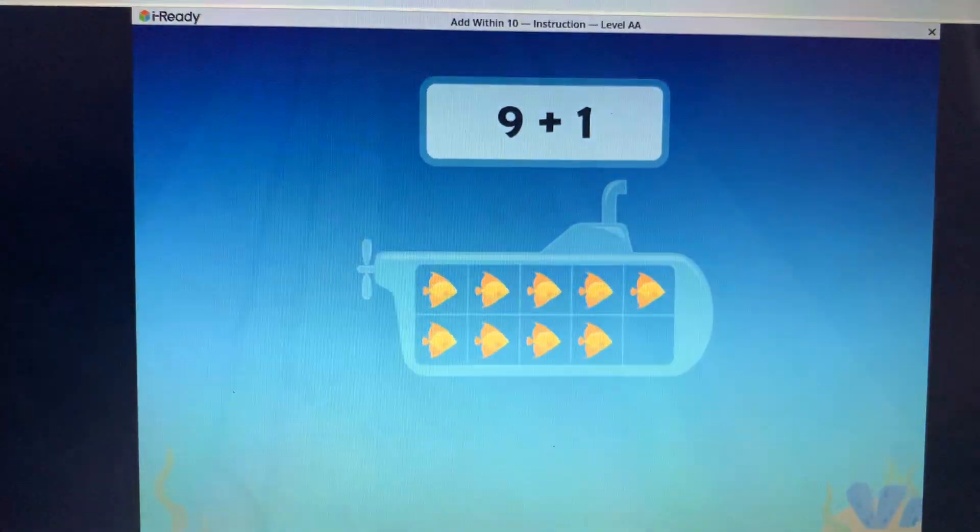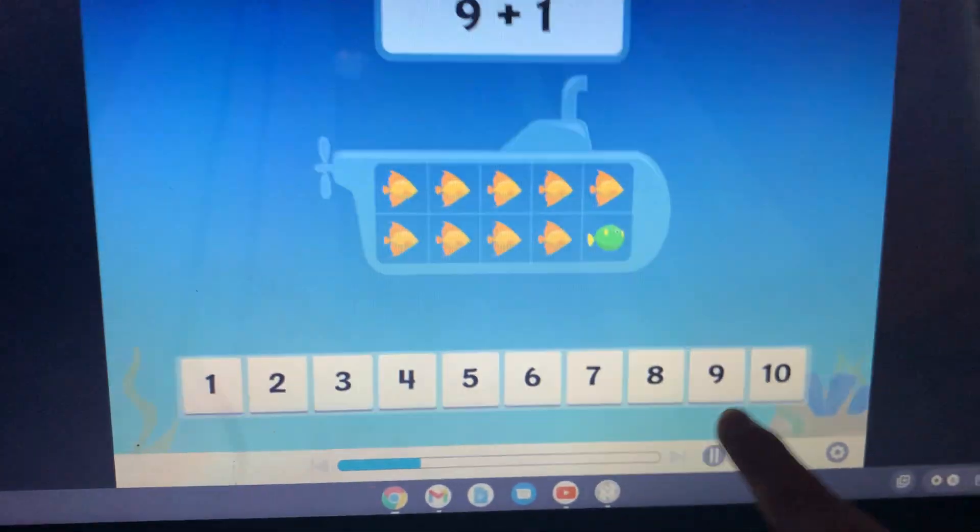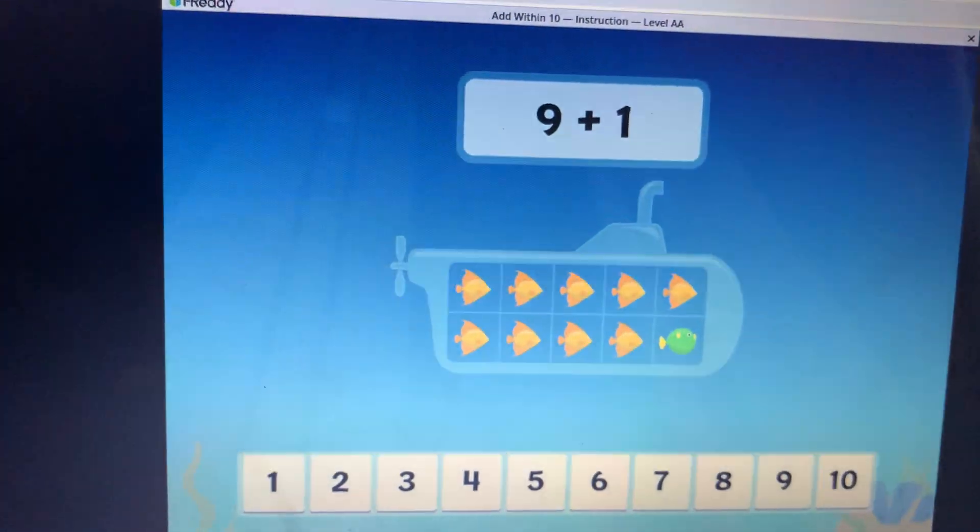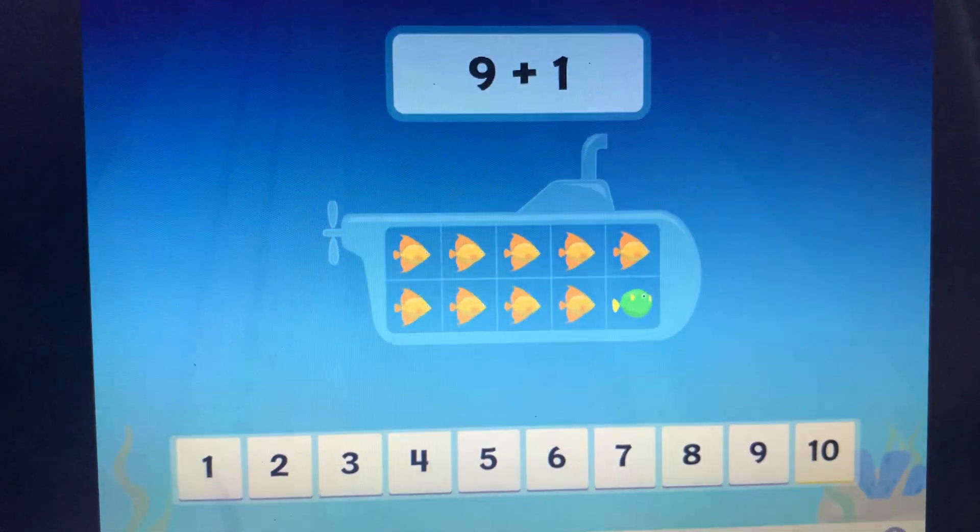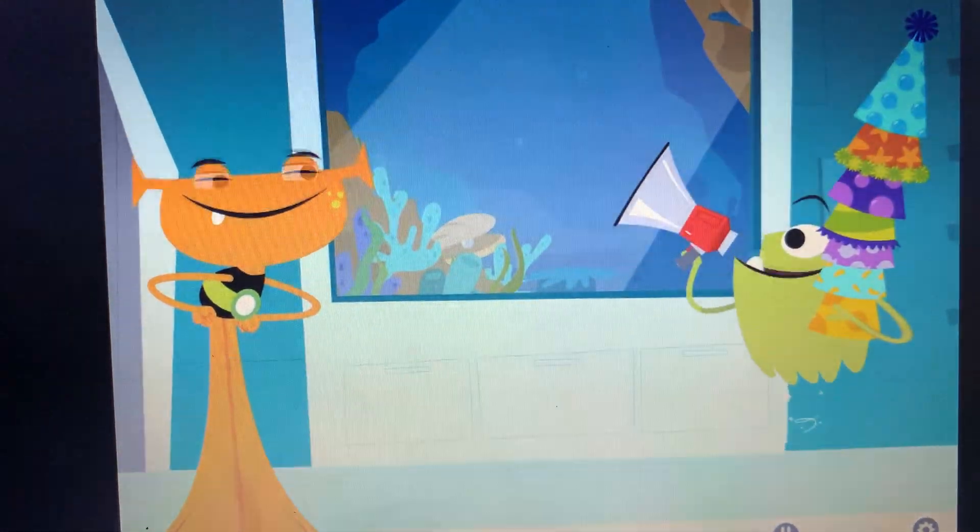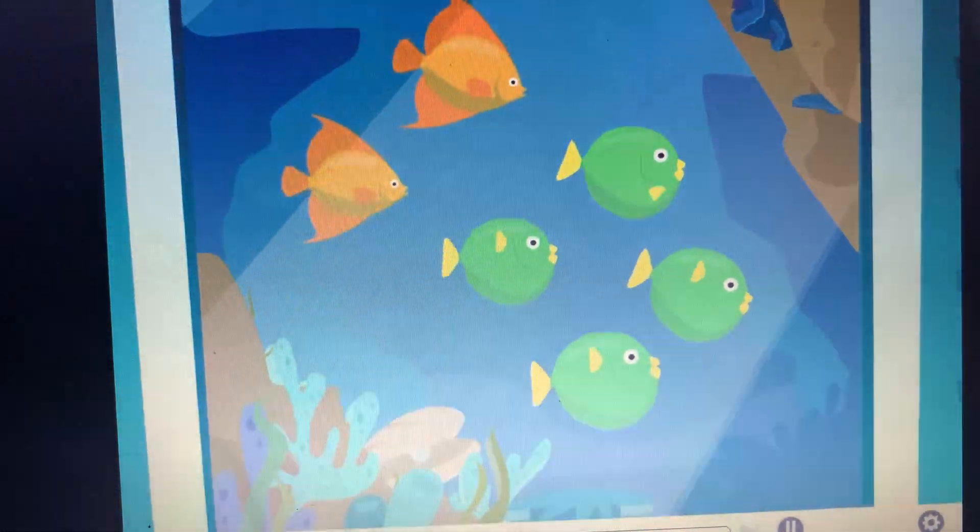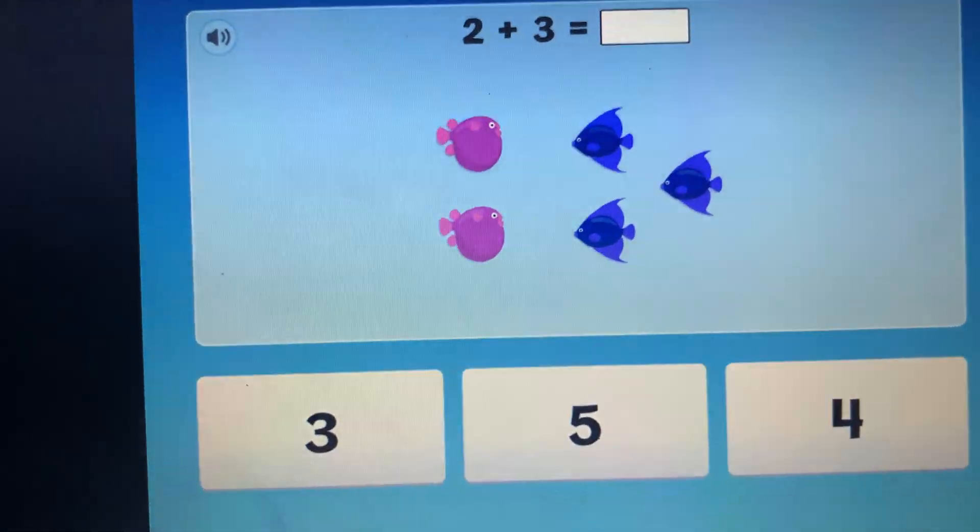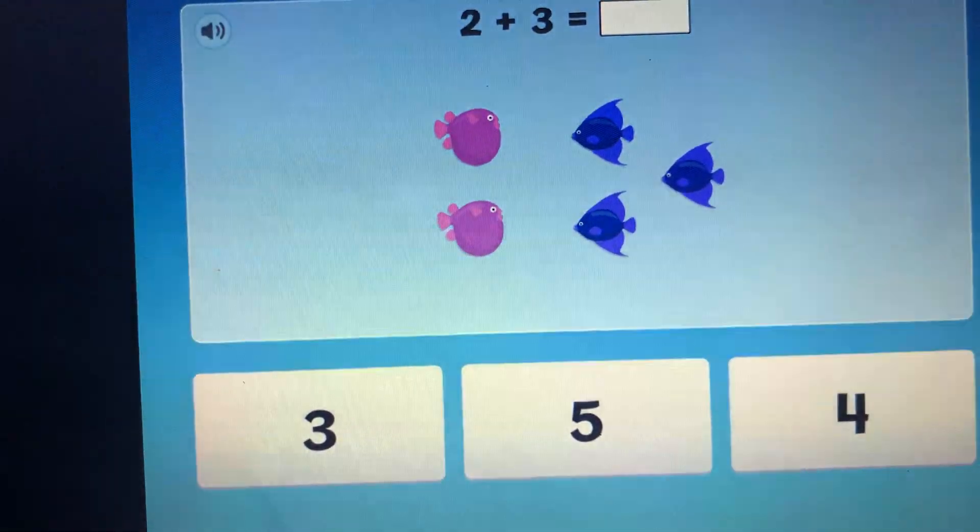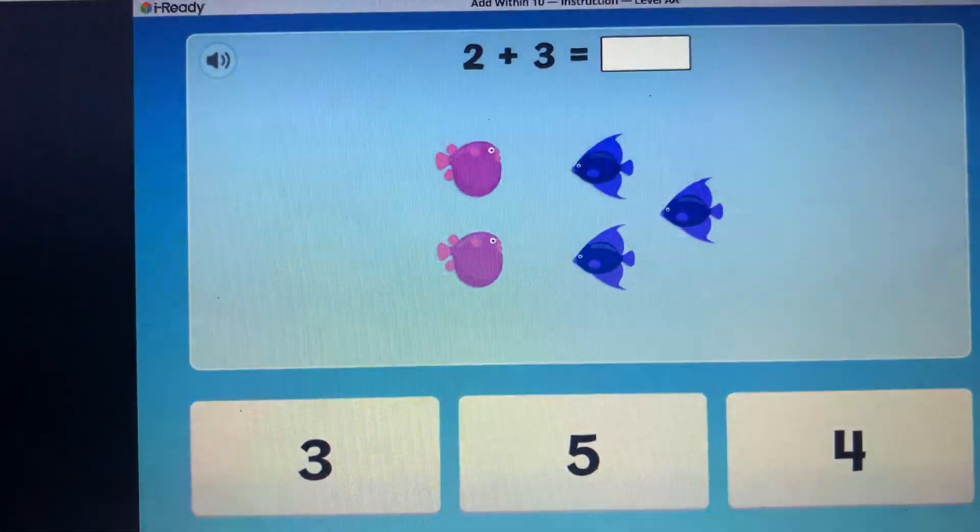Here are nine fish. Now add one more. How many fish are there in all? Awesome! Nine plus one equals ten. Ten! Attention fish! Who wants sparkle hats? Four plus two equals six. Whoa! There are two fish. Then three more fish join them. What is two plus three?